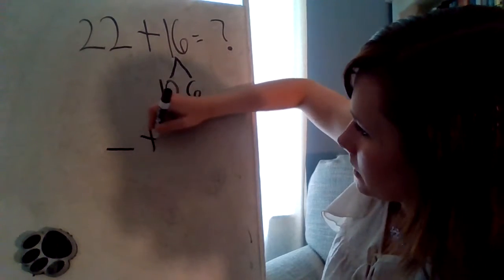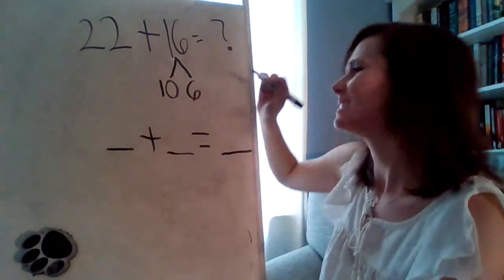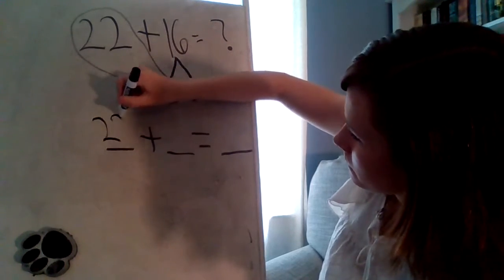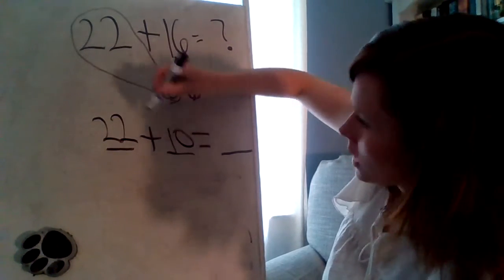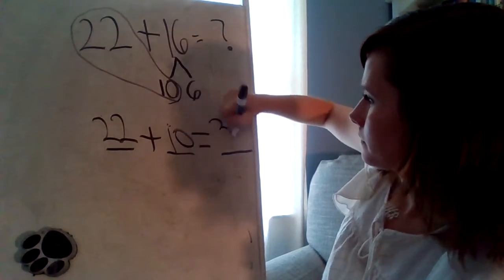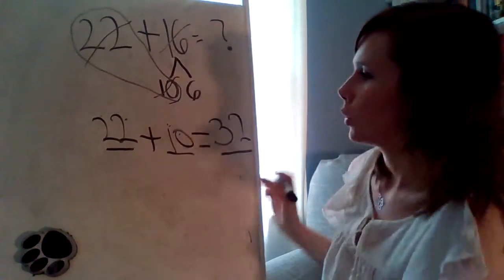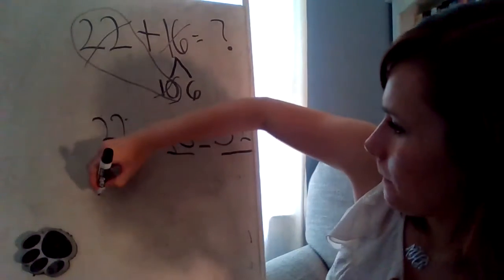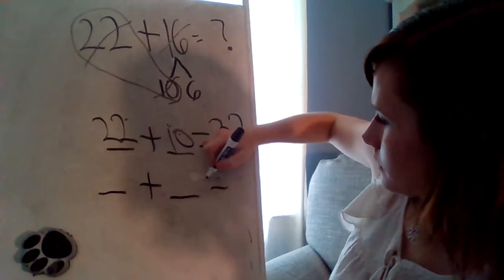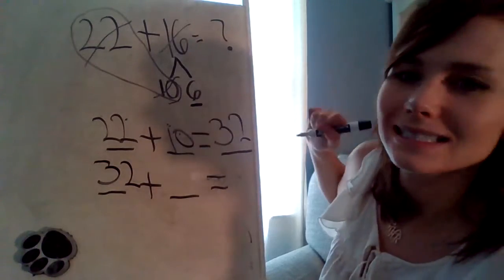All right. What is our first number sentence that will help us solve? Okay. Let's add the tens together. So we will add 22 plus 10. 2 plus 1 is 3, see I'm adding the 10s. 2 plus 0 is 2. Nice job. What's my next number sentence? Right. Because I'm not done yet.